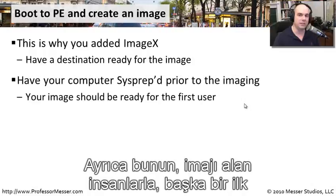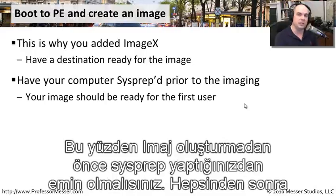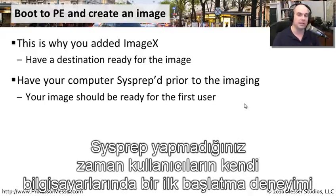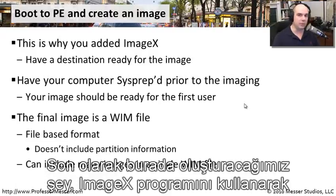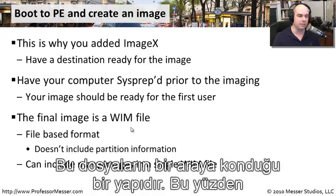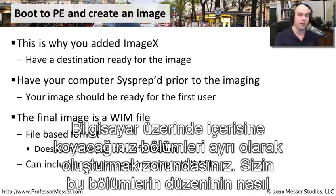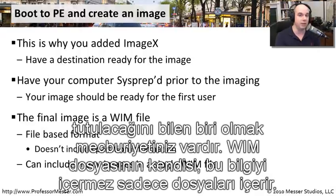You also want to remember, if you'd like an out-of-box experience for the people that receive this image, make sure you sysprep prior to creating the image. When somebody puts this image on their system, it's going to look exactly the way it looked the last time you left it - unless you sysprep, they won't get that out-of-box experience. The WIM file that ImageX creates is based on a set of files - it does not include information about partitions. You have to build partitions separately on the destination machine.